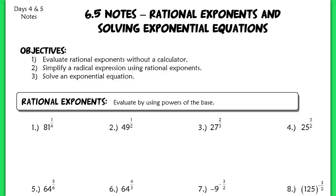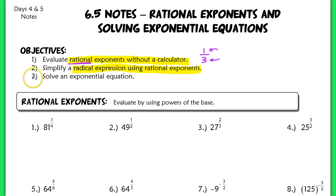This lesson is part 1 for section 6.5. We're going to be talking about rational exponents, and then in part 2, we're going to be solving exponential equations. Our first objective for today is to evaluate rational exponents without a calculator. A rational number is a number that can be written as the quotient of two integers. We're also going to simplify radical expressions using rational exponents, and solving exponential equations is for tomorrow.